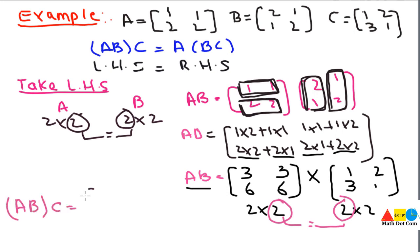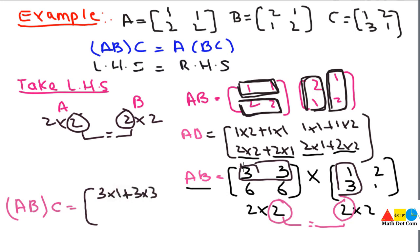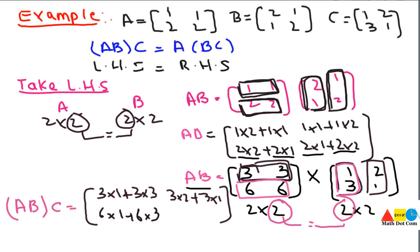We will multiply AB and C. Multiplying row 1 of AB with column 1 of C: 3×1 + 3×3. Then row 1 with column 2: 3×2 + 3×1. Then row 2 with column 1: 6×1 + 6×3. Then row 2 with column 2: 6×2 + 6×1. Simplifying: 3×1=3 and 3×3=9, so 9+3=12. And 3×2=6 and 3×1=3, so 6+3=9.